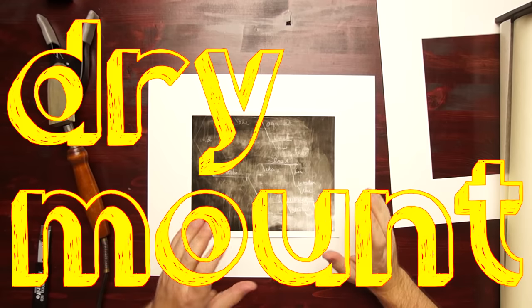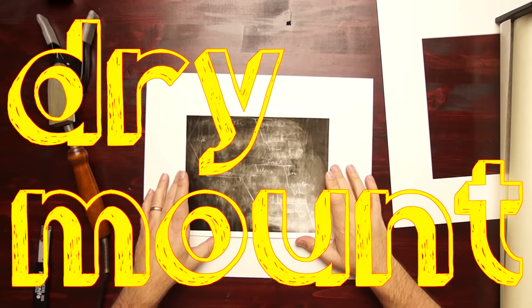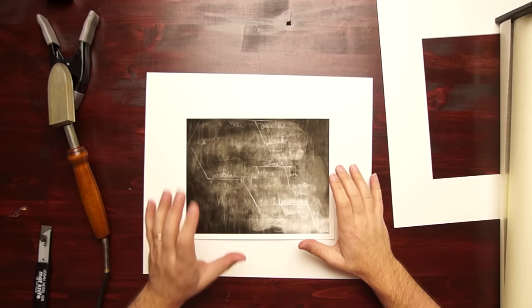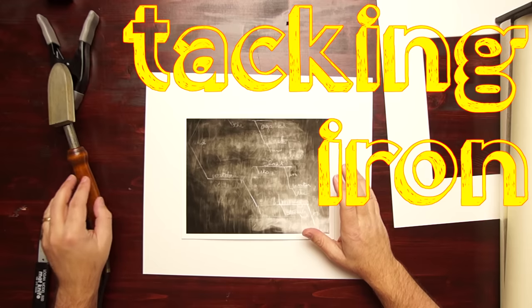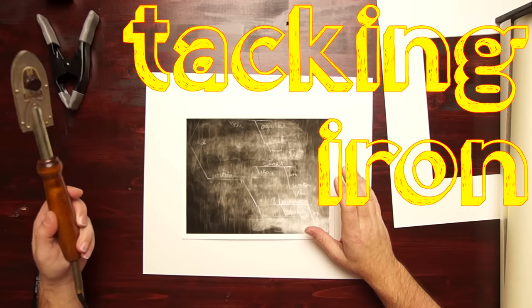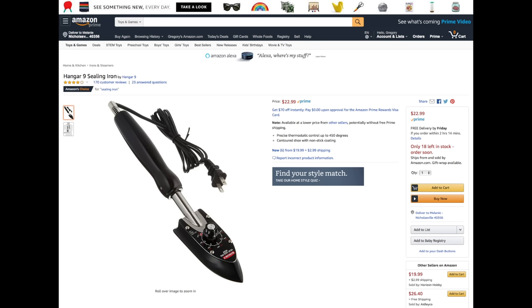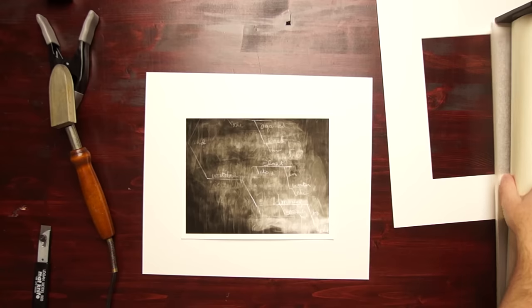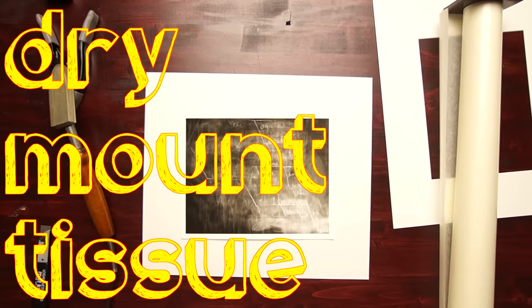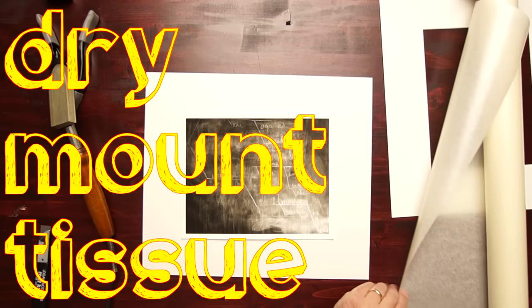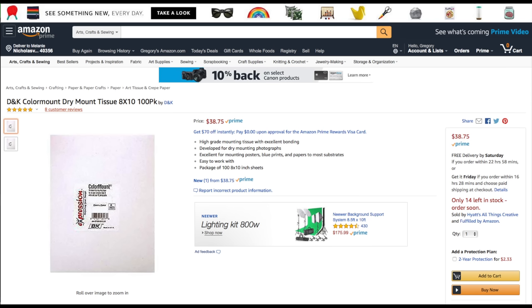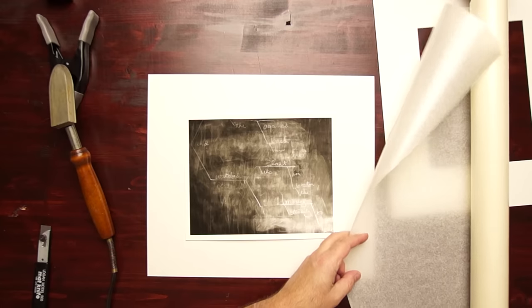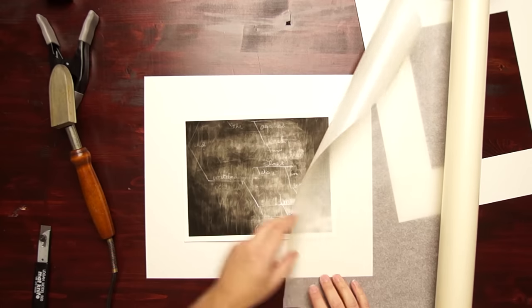For dry mounting a print, you're going to need a few extra things and a few extra steps. One, you're going to need a tacking iron. It's a lot like a little bitty clothes iron, but it acts a little bit differently. Then you're going to need some dry mount tissue and, of course, a dry mount press. Now, tissue does come in sheets. I've got it right now in just a big roll. So I'm going to get some out.